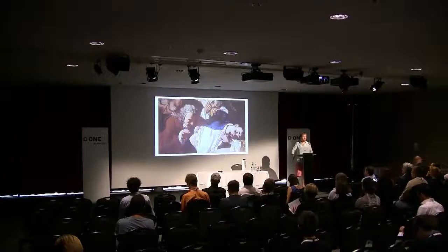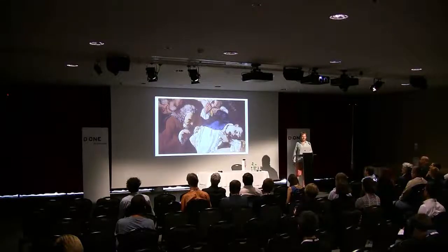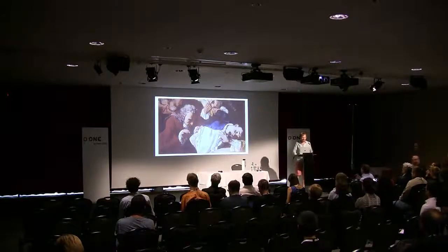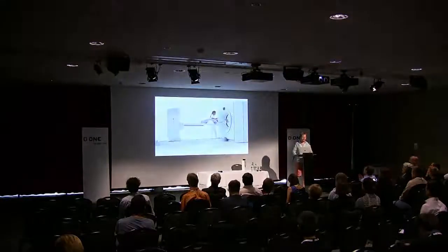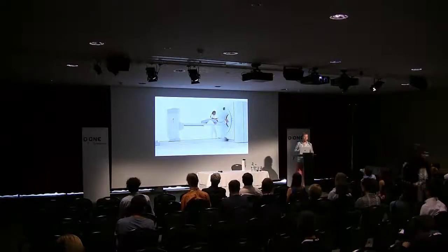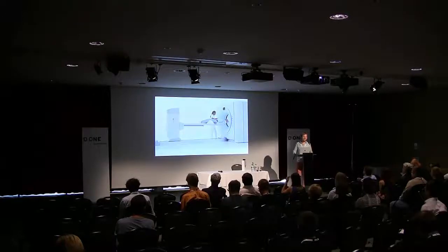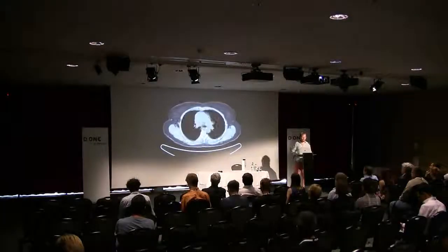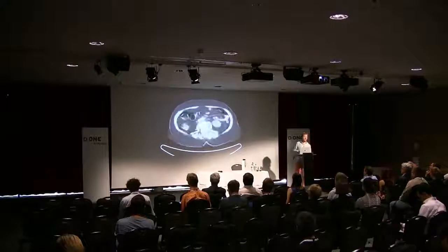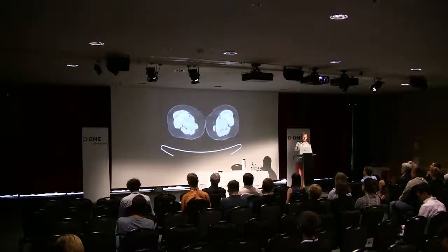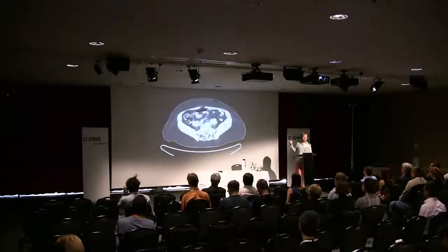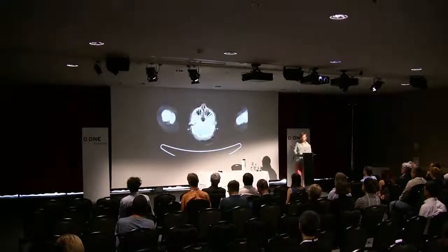If you had been born in 1870, a very different procedure might have been the next step after coughing blood. But luckily most of you were not alive around then, and so we have much better tools available today that allow us to image what's going on and try to figure out what's happening inside your lungs. This is an example of a CT scan where you can go through the entire body, look at all the different anatomical structures — lungs, muscles, heart, and hopefully tumors as well.